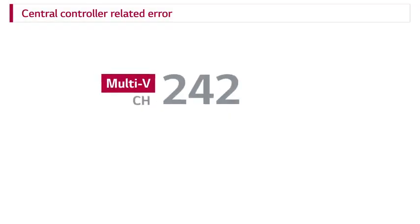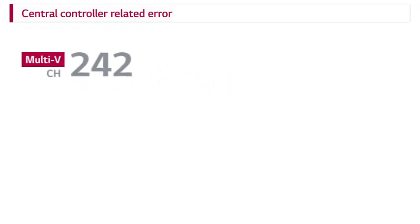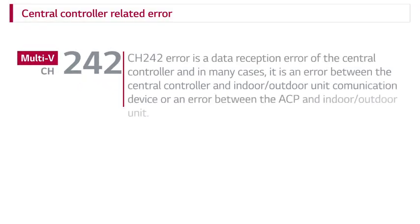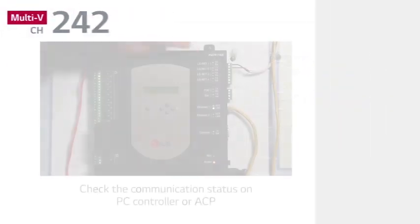Central controller related error: CH242 is a data reception error of the central controller. In many cases, it is an error between the central controller and indoor-outdoor unit communication device, or an error between the ACP and indoor-outdoor unit.